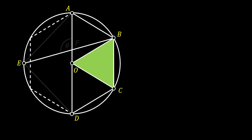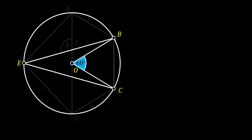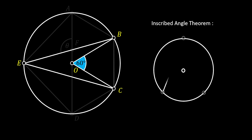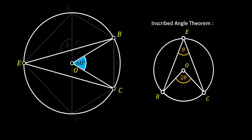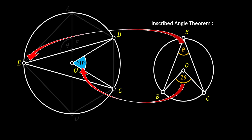We know that the angle at point O of this triangle must be 60 degrees. Now let's pull the line from point E to point C and focus on the angle at point E. Using the same inscribed angle theorem from the previous method — the peripheral angle must be half the central angle — our central angle is 60 degrees, which means the angle at point E will be 30 degrees.